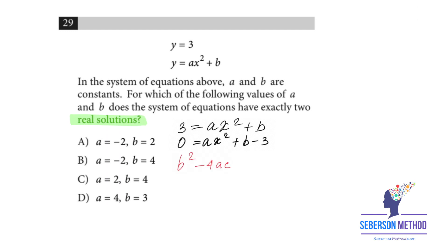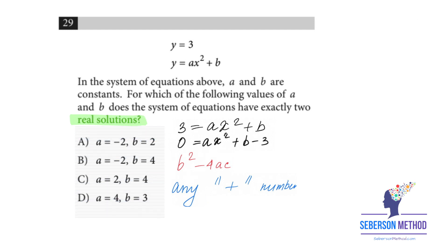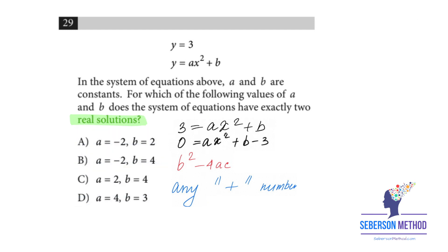Your discriminant should be equal any positive number. Now, run the quick test through your a and b through your answer choices and tell me which one of the answer choices gives you a positive discriminant. I hope you're saying that the positive discriminant comes from the answer choice b.